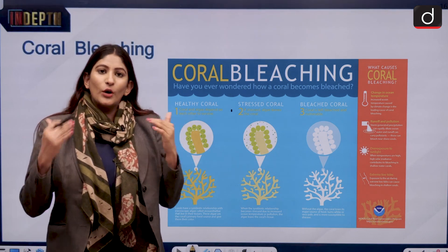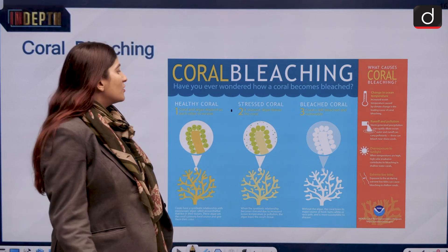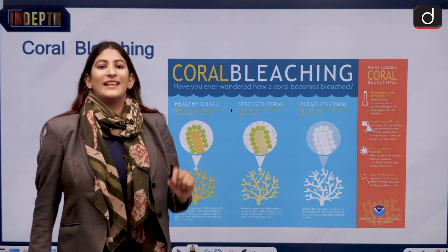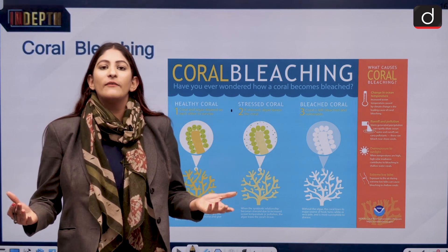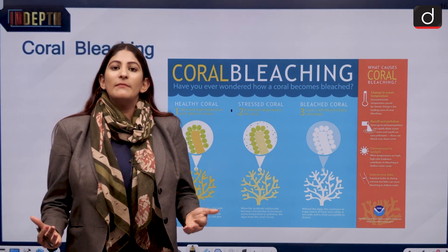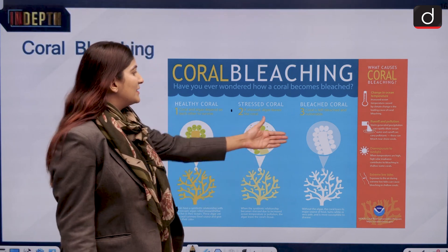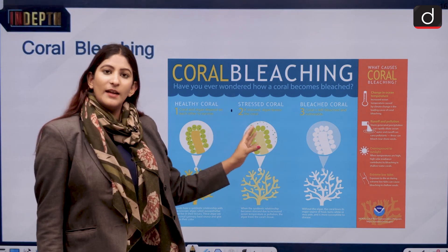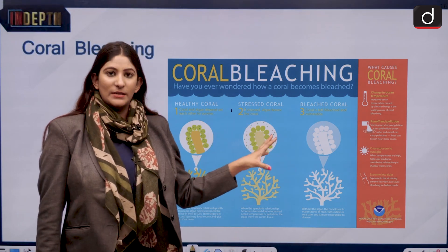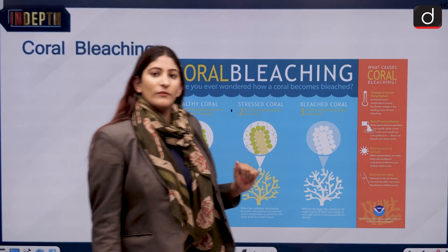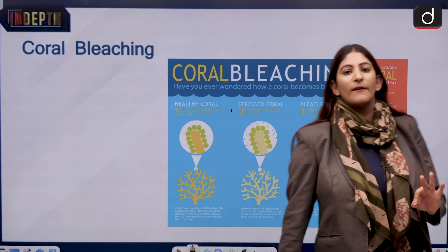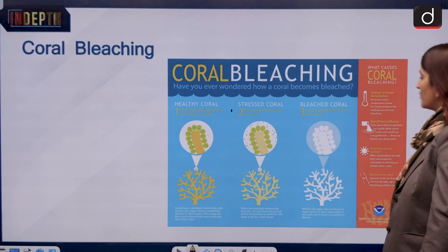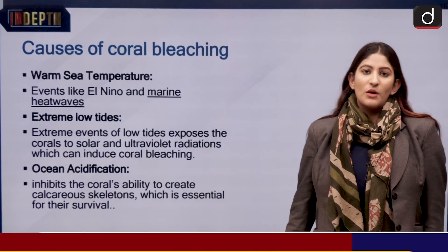When corals are not getting proper nutrients, the zooxanthellae start leaving the corals. When zooxanthellae leaves, the corals no longer have anything to provide them food and color — and that is when coral bleaching occurs. These corals can be reclaimed as healthy if we start taking care of them. Remember that zooxanthellae is our friend.